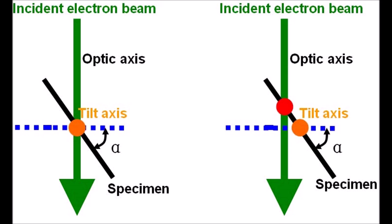Why is it important to set eucentric height properly? The performance of your microscope, and specifically the objective lens, is always optimized assuming your specimen is at eucentric height. If you deviate from eucentric height, the objective lens must be deviated from its optimal value, impacting microscope performance and also changing any calibrations for magnification or camera length for diffraction patterns.